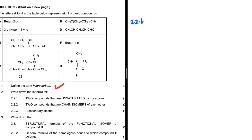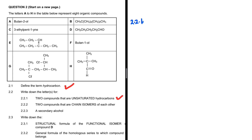Question 2.2.1: we're looking for two unsaturated hydrocarbons — compounds with a double or triple bond. Looking at our table: A is butanol, so that is an alcohol. C is pent-1-yne, so we know there is a triple bond in there — C is definitely an unsaturated hydrocarbon.